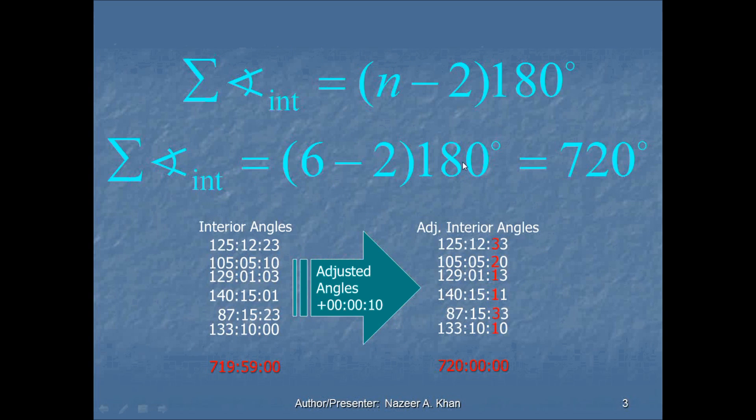6 minus 2 times 180 will give you 720 degrees, 0 minutes, 0 seconds. So if we add up our interior angle and it matches this, there is no adjustment that is necessary. However, if it does not match that exactly, then we have to adjust the interior angles. As you can see, the interior angles are listed here, and I've summed them, and I got 719 degrees 59 minutes 00 seconds. So they don't exactly match 720. We are 1 minute short from 720, which is 60 seconds from 720.